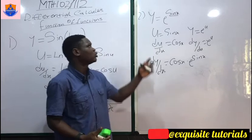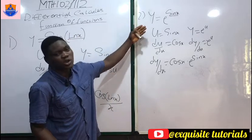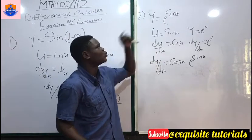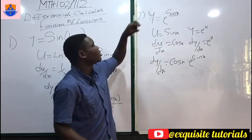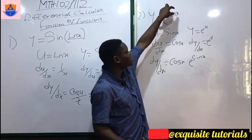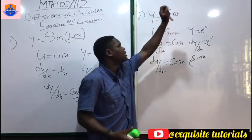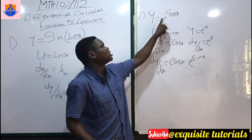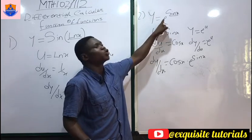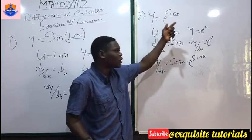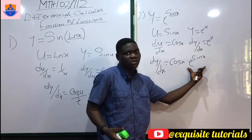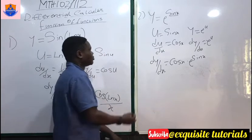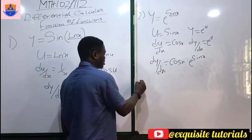Using the shortcut: the first function is the exponential. Differentiate what is inside to get cos x, and the exponential function repeated gives the same exponential. So the answer is cos x · e^(sin x).